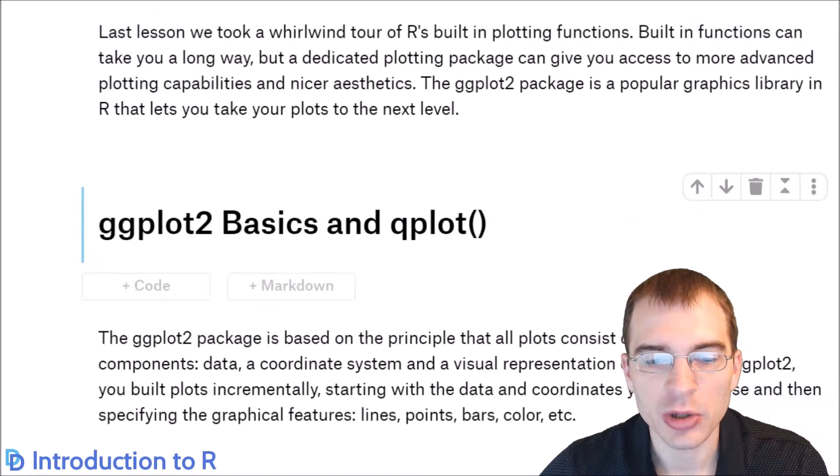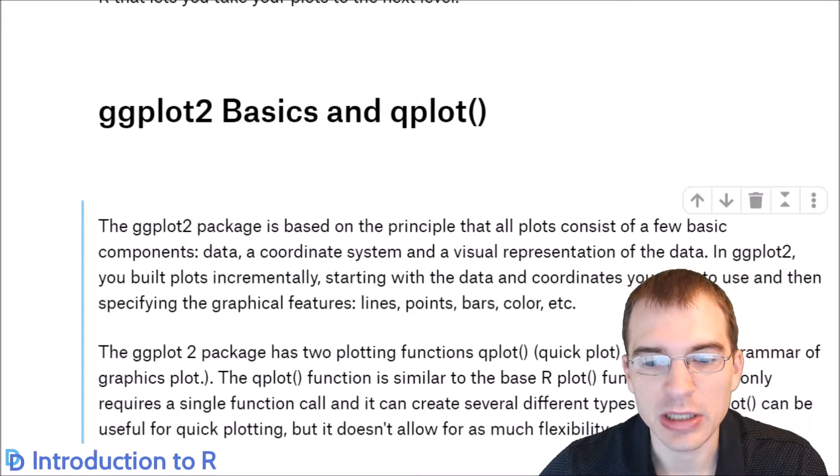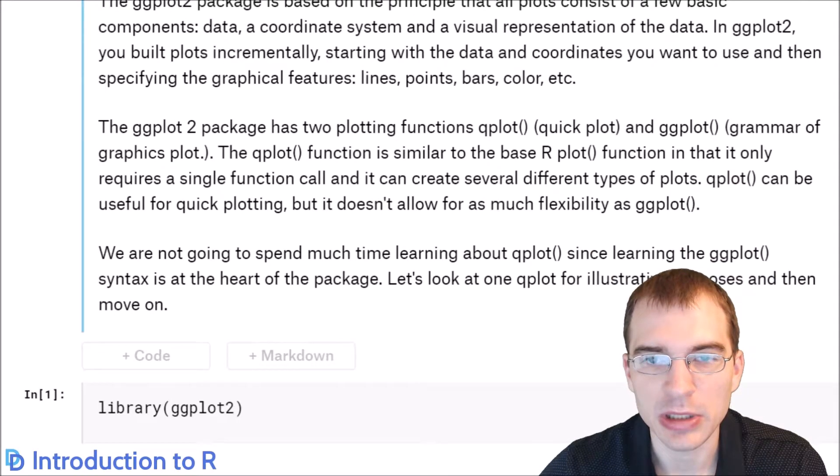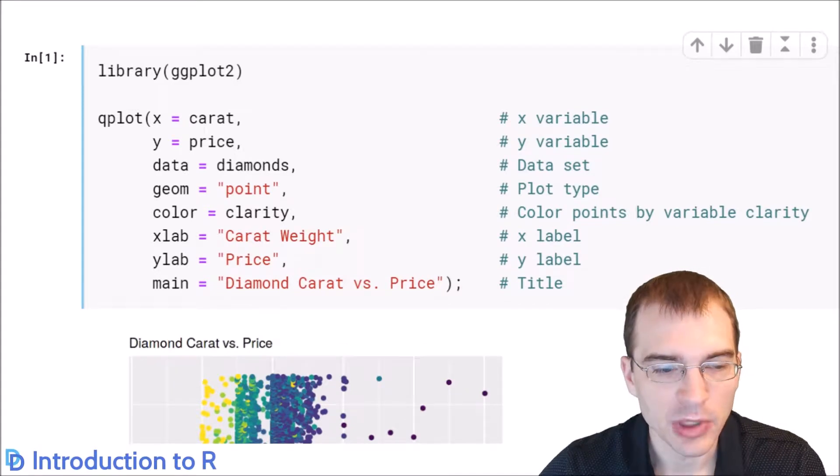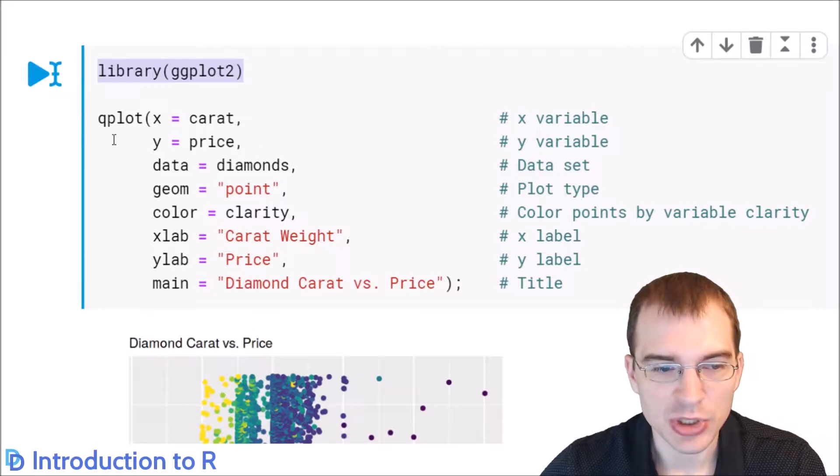First, we'll show how to make a basic quick plot using ggplot2. The quick plot or qplot function is analogous to the plot function in base R. We'll load in the ggplot2 library, then call qplot to create the plot.